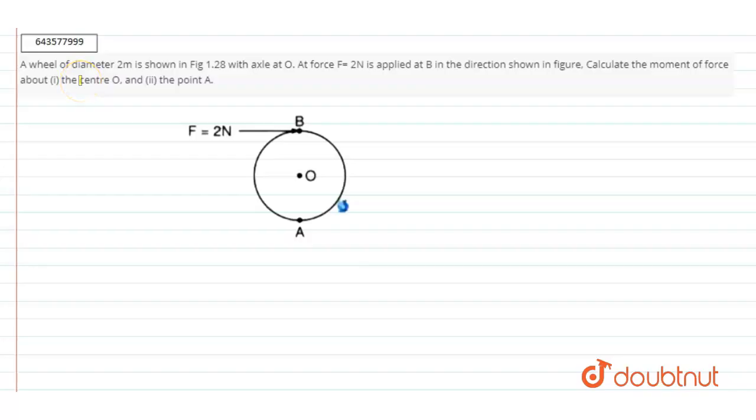Hello, so our question is: a wheel of diameter 2 meters as shown in figure with axle at O. A force of 2 Newton is applied at B in the direction as shown in the figure. Calculate the moment of the force about the center O and at the point A.